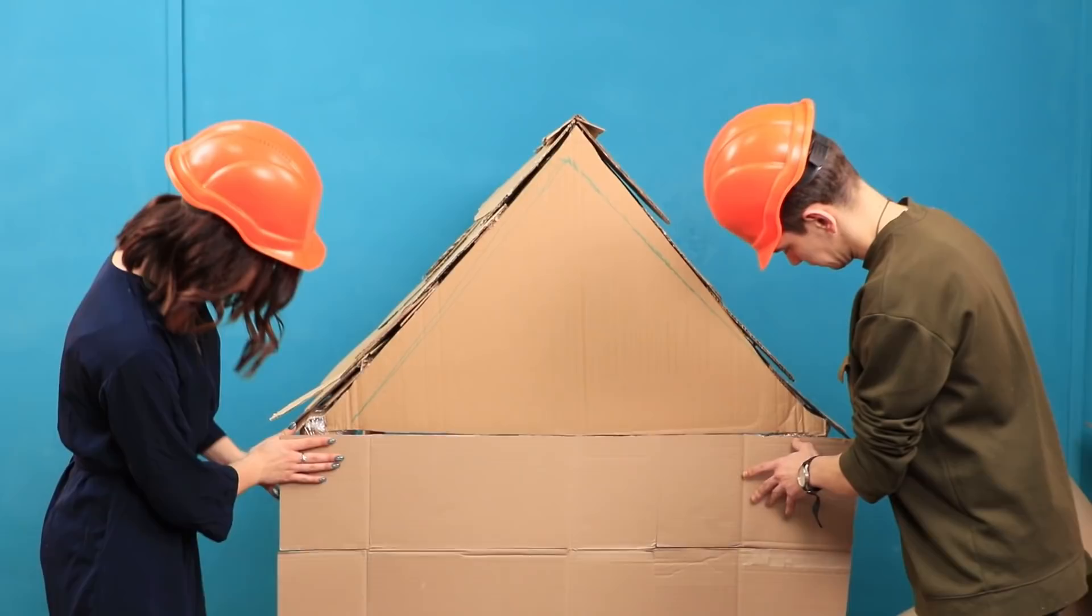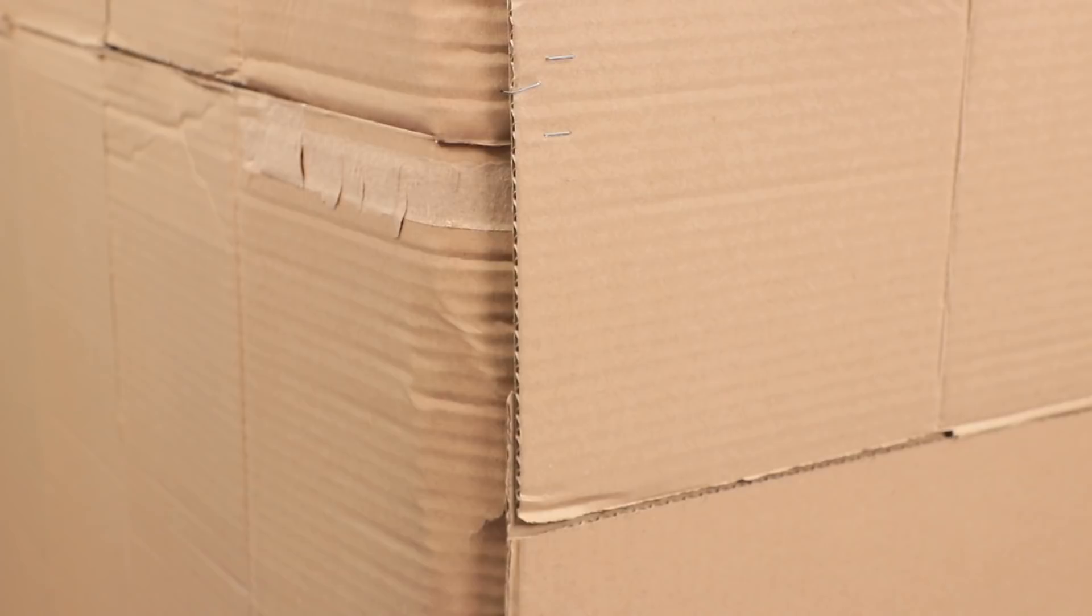Glue a cardboard wall to the stands and fasten the remaining sides with a construction stapler! A frame for the house is almost done! Cut a round window in the attic! You can spy on passersby from here!